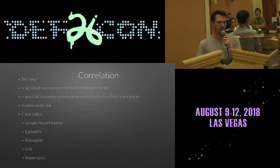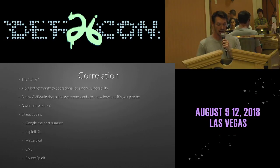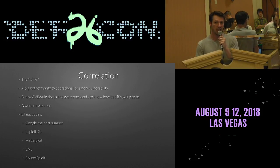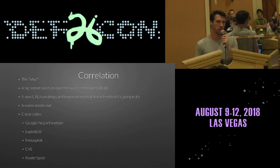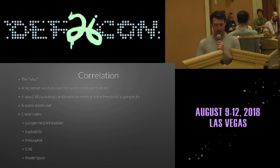Some easy hacks for doing the correlation piece: Google the port number to figure out what's associated with it, search GitHub to find the port number associated with something you're seeing, look on ExploitDB for new exploits for a given vulnerability, use Metasploit to figure out default port numbers for different things, look at CVE pages — sometimes they'll contain the port the vulnerability is on, though most of the time they don't. Check out RouterSploit, which is like Metasploit but only for routers.